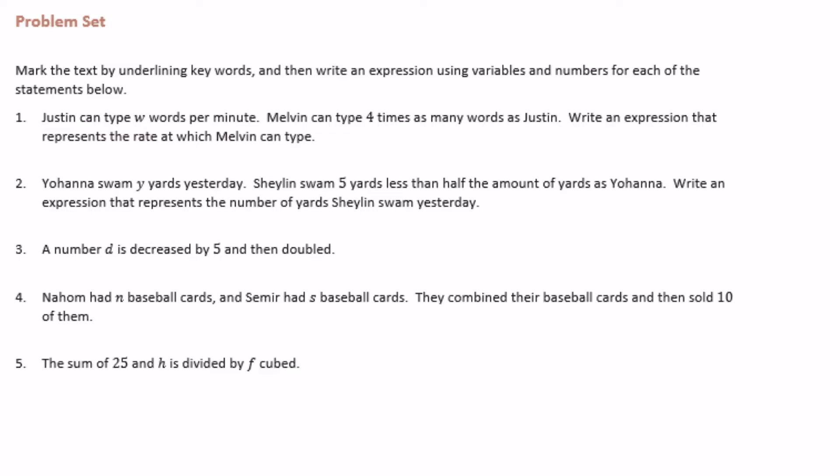Number 1. Jason can type W words per minute. Melvin can type 4 times as many words as Justin. I'm going to underline 4 times because that's a keyword telling me that I need to multiply. Write an expression that represents the rate at which Melvin can type. So Justin types W words and Melvin can type 4 times as many words as Justin. So we're going to do 4 times W or we can just leave it as 4W.